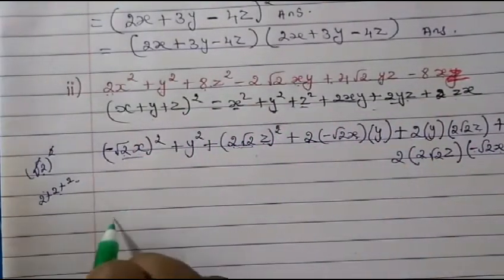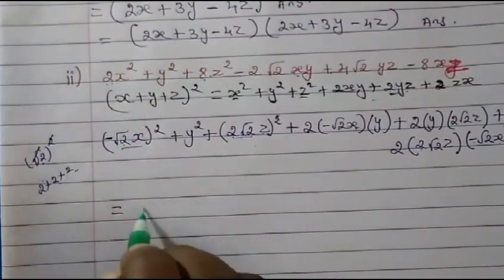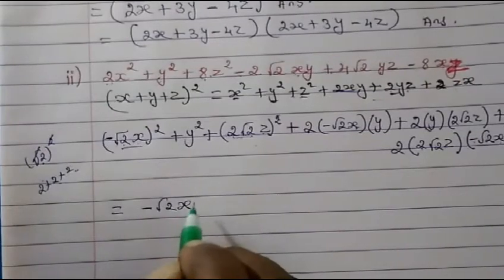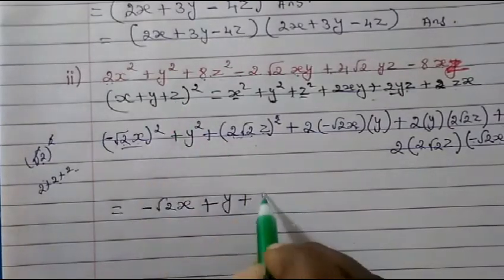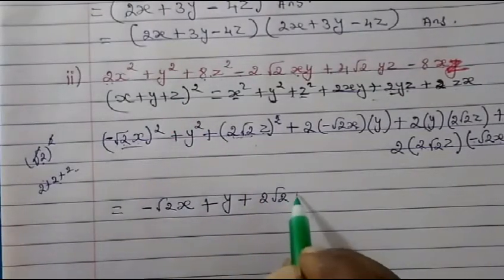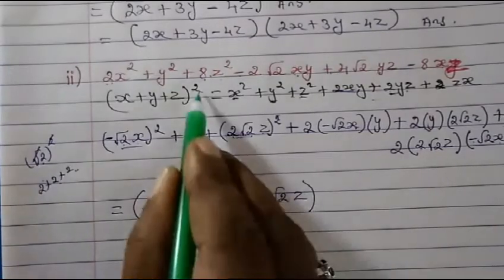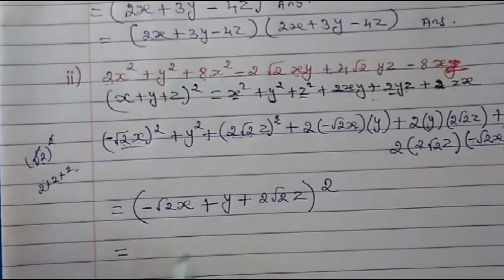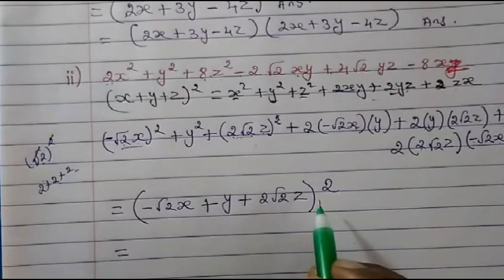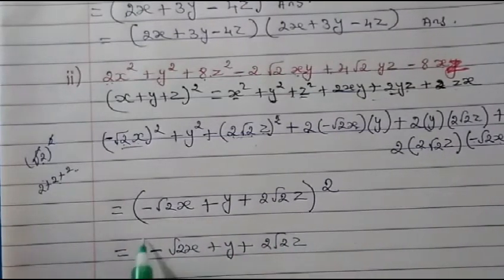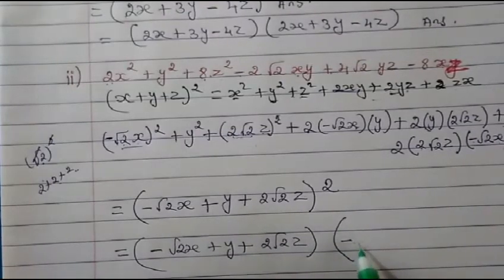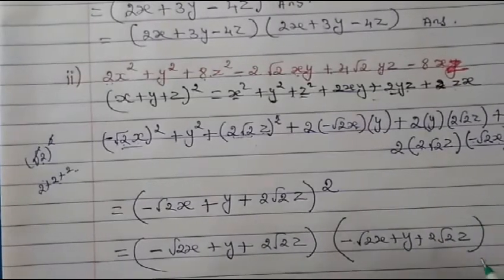So now it is balanced and we can write in the factored form. In the place of x we have minus √2 x, y is y, and z is 2√2 z — so whole square. That gives us (−√2 x + y + 2√2 z) whole square. Since we have to write in factor form: (−√2 x + y + 2√2 z) times (−√2 x + y + 2√2 z). That's our answer.